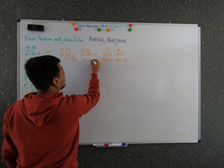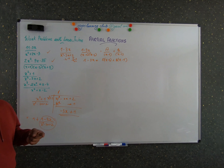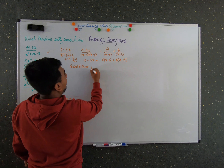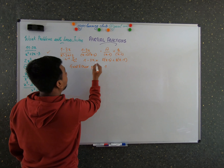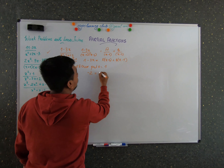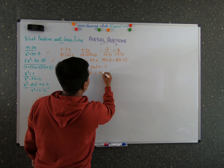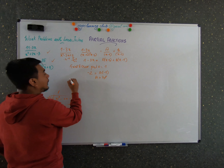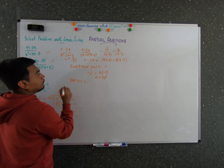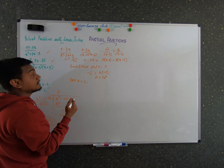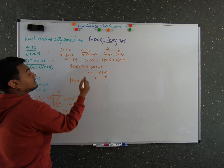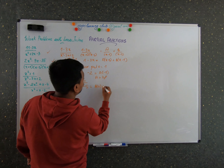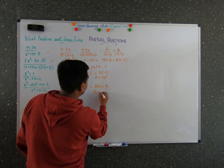This is equal to 1 minus 3x. Now we use the trial and error method. Put x equals 1: 1 minus 3 is minus 2, and A times (1 minus 2) gives minus A, so A equals 2. Now put x equals 2: 1 minus 3 times 2 is 1 minus 6 equals minus 5, and B times (2 minus 1) equals B, so B equals minus 5.